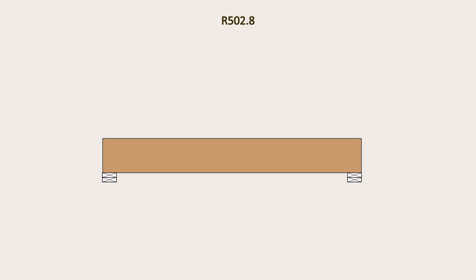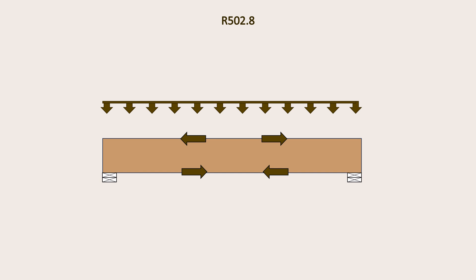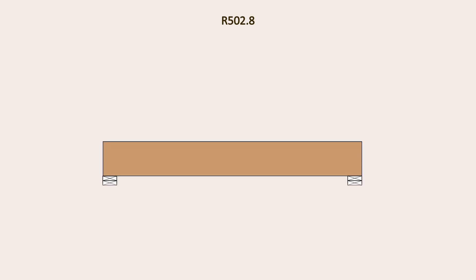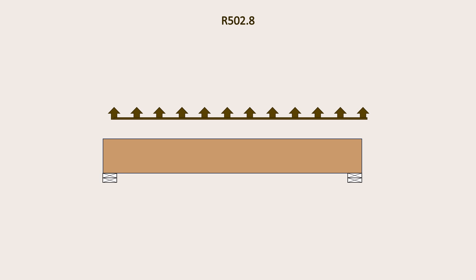What does it mean when the code says that notching is not permitted on the tension side? When a framing member such as a joist or beam supports load along its span, the cross-section is subjected to longitudinal internal forces or normal stresses along the axis of the beam. For vertical loads acting downwards, the upper part of the beam or joist is subjected to compressive stresses while the lower part is subjected to tensile stresses. For vertical loads acting upwards such as wind uplift forces, the upper part is subjected to tensile stresses while the lower part is subjected to compressive stresses.